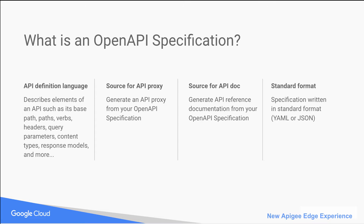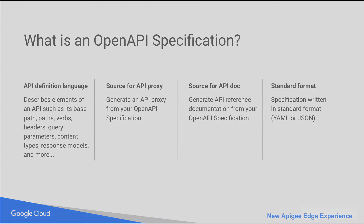An OpenAPI specification can be written in YAML or JSON format. Each format is designed to be human readable. Which format you choose is a matter of personal preference, though each provides different advantages.